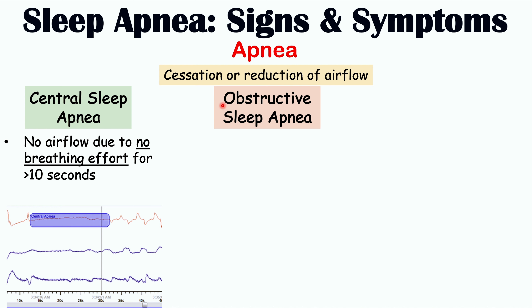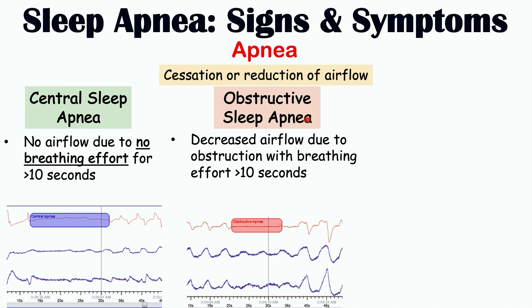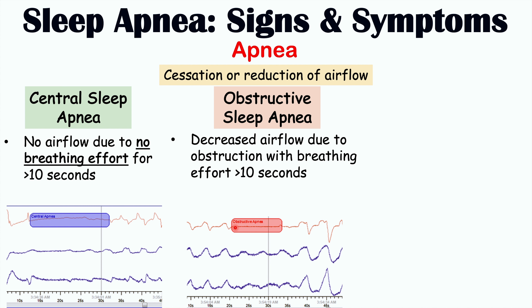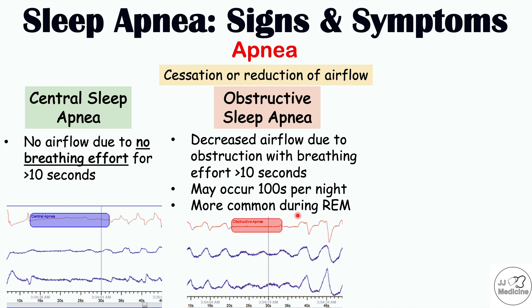With regards to apnea episodes in obstructive sleep apnea, they are different from those in central sleep apnea. In OSA, the patient has decreased airflow due to obstruction with breathing effort for at least 10 seconds. The reason for decreased or absent airflow is not a lack of breathing effort, but tissue in the airway obstructing airflow due to airway collapse. When sleeping, especially on their back, the muscles in the neck and throat relax, the airway collapses, and air cannot pass. These episodes can occur hundreds of times per night and are more likely to occur during REM sleep.